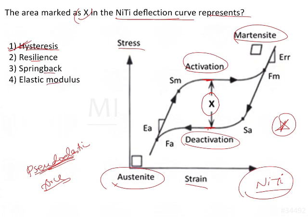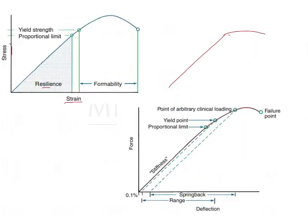How will we differentiate these properties from hysteresis? Resilience is basically the energy-storing capacity of a material. That is the area under the stress-strain graph up until the proportional limit — that is, up until the material behaves like an elastic material, meaning when it is bent, it can come back to its original position.